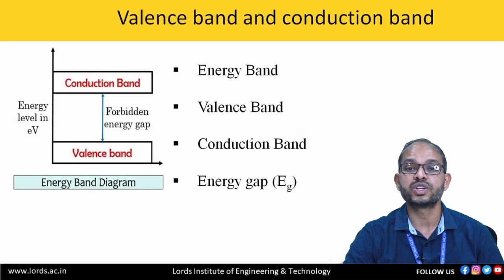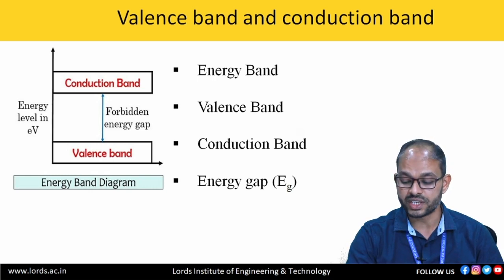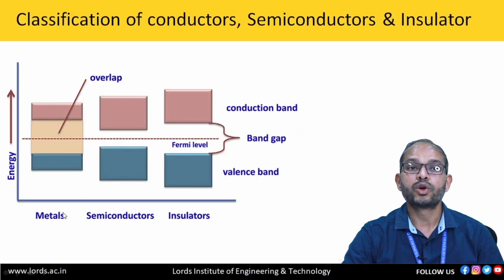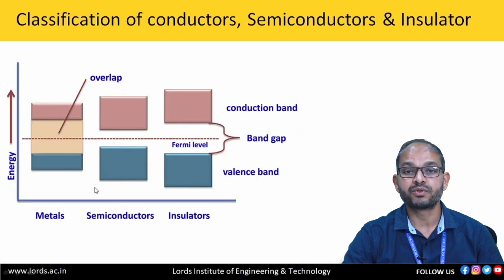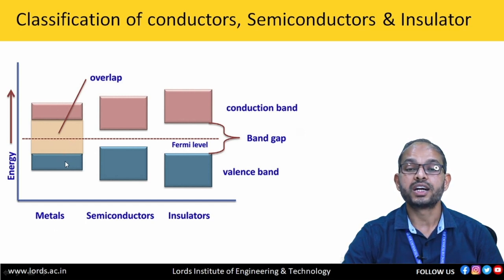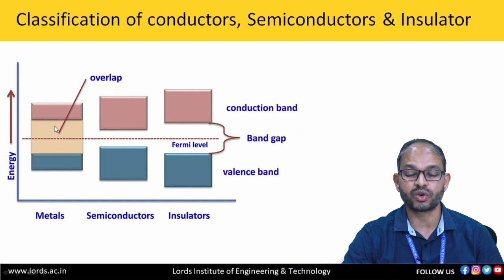This diagram helps us understand the energy band structure of all materials, and particularly for semiconductors, we will see how it is. Look at the energy band diagram for different materials. For metals, both bands overlap with each other, and so all the valence electrons act as conduction electrons — they conduct electricity.